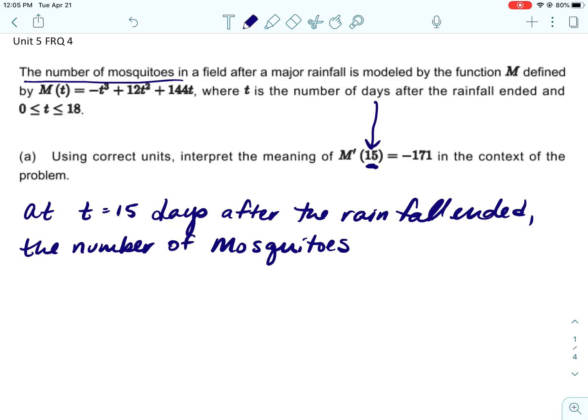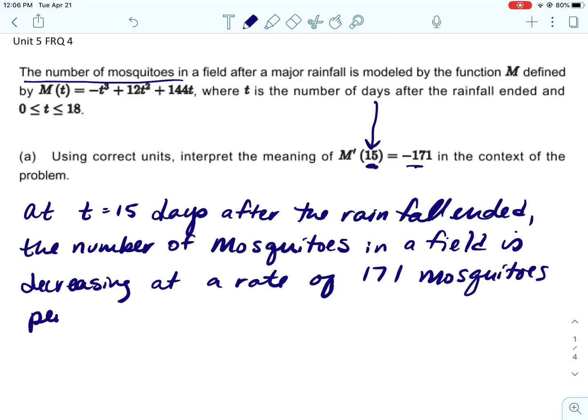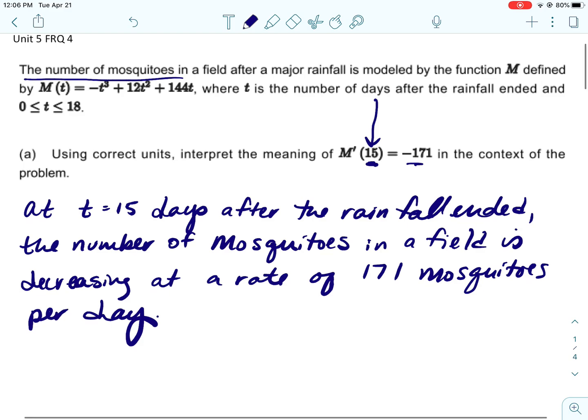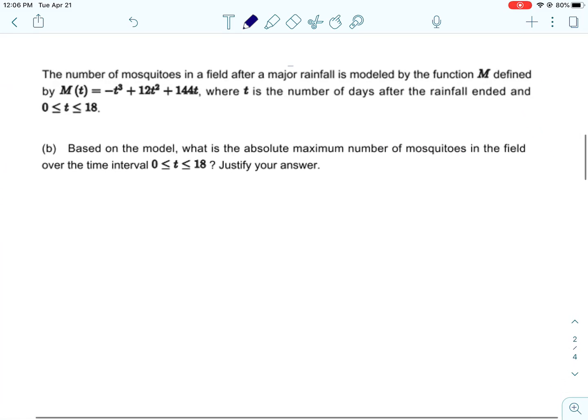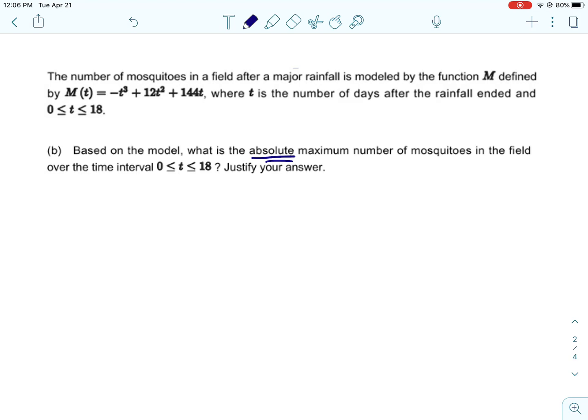All right, the number of mosquitoes. So we're still using the words in the problem. Okay, now it's important that you know that this is a rate. M' is a rate. So the number of mosquitoes in a field is, because it's a negative value, decreasing at a rate of 171 mosquitoes per day.